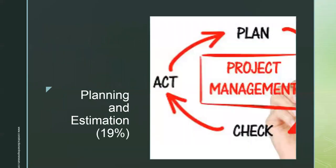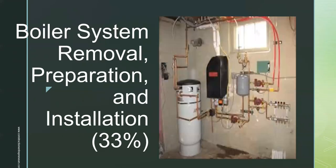This classification has five major sections that you will find on the test. The first one is Planning and Estimation at 19%, and that's going to cover two sections: Plan Boiler Room Projects and Estimate Boiler Projects. The next one, at 33%, is Boiler System Removal, Preparation and Installation, covering four sections: Removal of Old Boiler Systems, Preparation of Job Sites for New Boiler Systems, Install New Boiler Systems, and Test and Complete Boiler Systems.